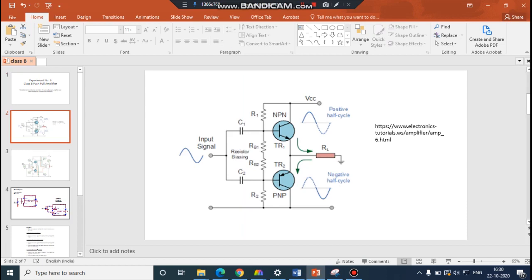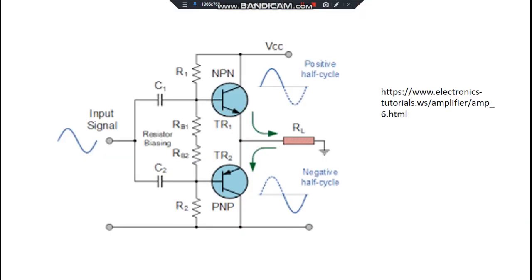If you observe the circuit diagram of your Class B push-pull amplifier, you have an NPN transistor and a PNP transistor connected in this fashion. You have a common input signal given to both the bases, but usually the input signal is given out of phase to one of the transistors.